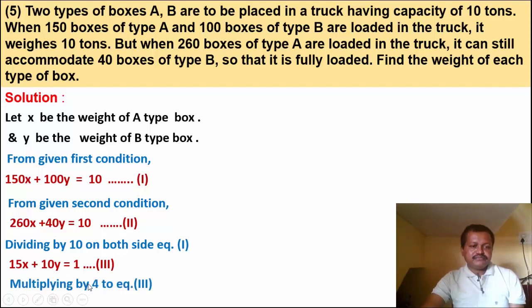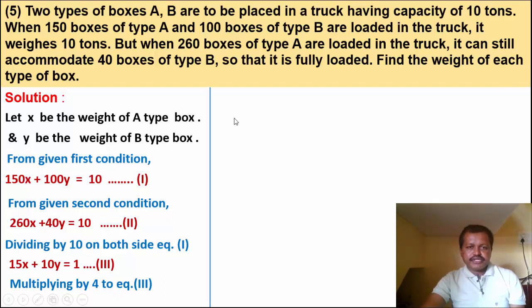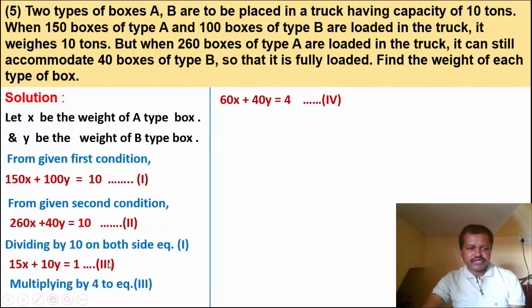Now multiplying equation 3 by 4: 60x plus 40y is equal to 4. This is equation number 4.